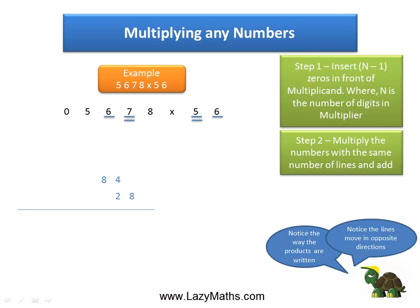The next step is 6 times 6 and 7 times 5. 6 times 6 is 36, and 36 plus 35 is 71. We put 71 in the carryover format.